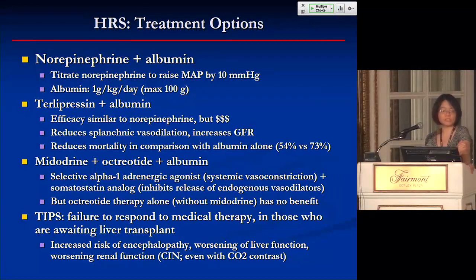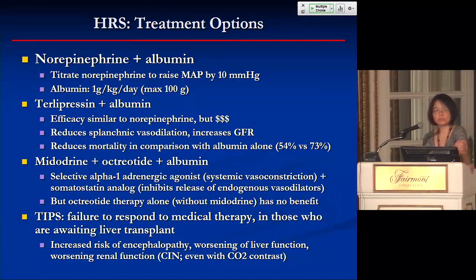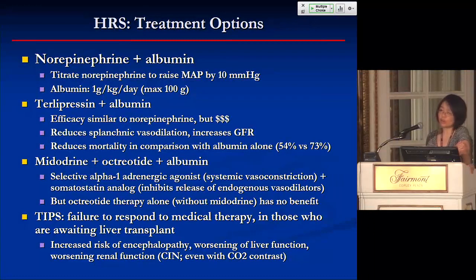Here in the U.S., for less sick patients we typically use the triple combination of midodrine, octreotide, and albumin. Midodrine can be started at 5 milligrams TID and titrated up to a max of 15 milligrams TID. Octreotide is used at 100 to 200 micrograms subcutaneously. Studies looking at octreotide therapy alone without midodrine showed no benefit in terms of mortality or improvement in serum creatinine levels in HRS.